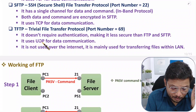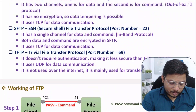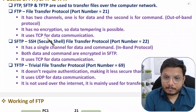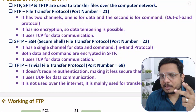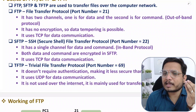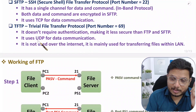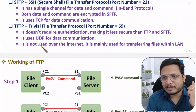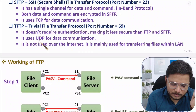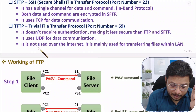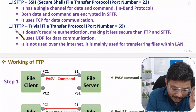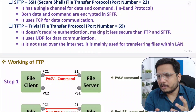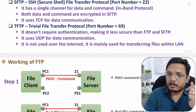TFTP uses UDP for data communication, while FTP and SFTP both use TCP. Because UDP is used, there is very little header overhead so data transfer is faster. However there are issues: it is less secure and UDP provides unreliable communication. Also, TFTP is not used over the internet — it is mainly used within a LAN only for data transfer.